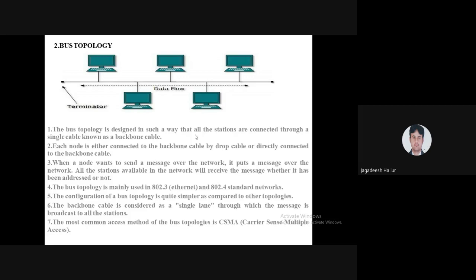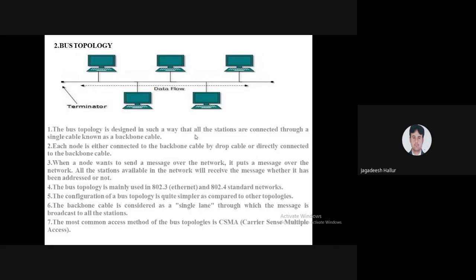In bus topology, we mainly use Ethernet IEEE standards — IEEE 802.3 and 802.4. It uses a single lane with the backbone of one cable. This is the simplest technology compared to others. Bus topology mainly uses CSMA — Carrier Sense Multiple Access. It just carries the information and broadcasts it to all computers — that is the disadvantage of bus topology.